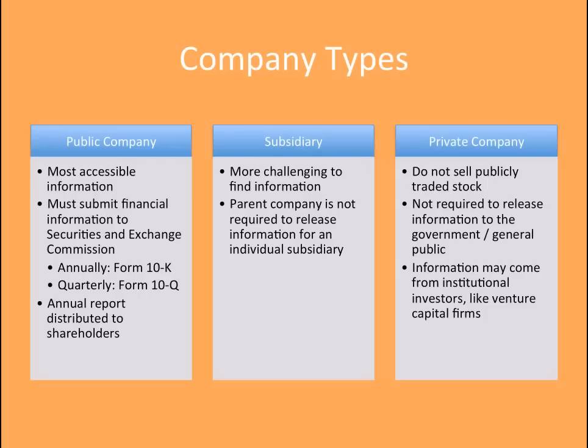The quarterly reports are also known as the 10-Q, and are filed with the Securities and Exchange Commission every three months. It is important to note that any document produced by the company itself, such as a 10-K or annual report, is considered a primary document. In contrast, press releases in trade journals or newspaper articles in the New York Times or Wall Street Journal are considered secondary research.